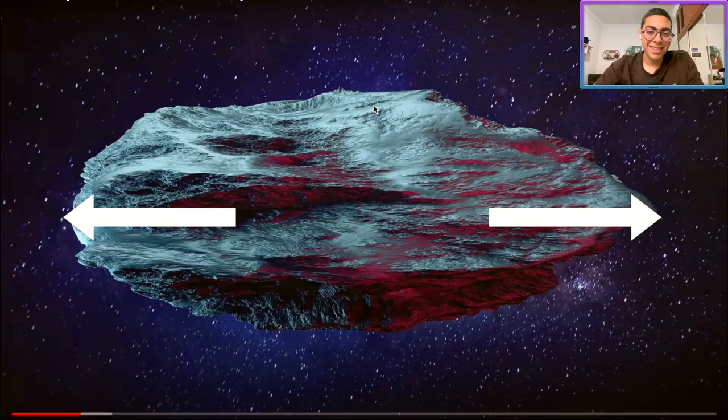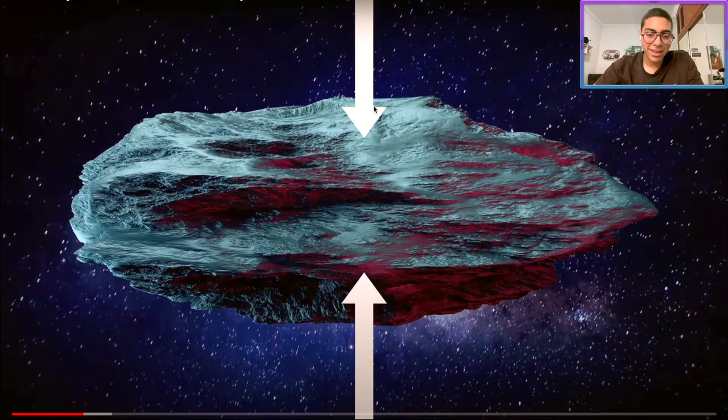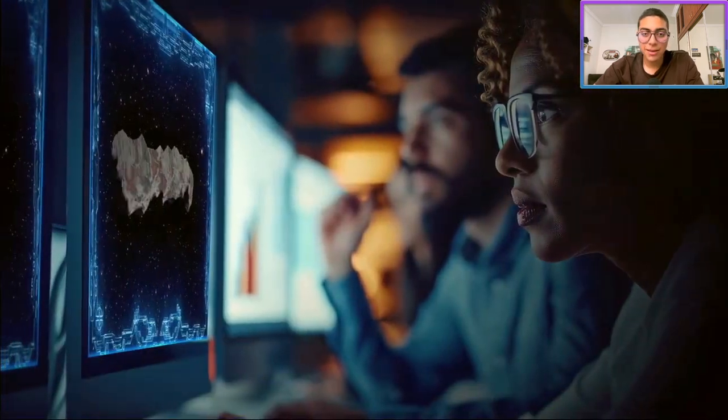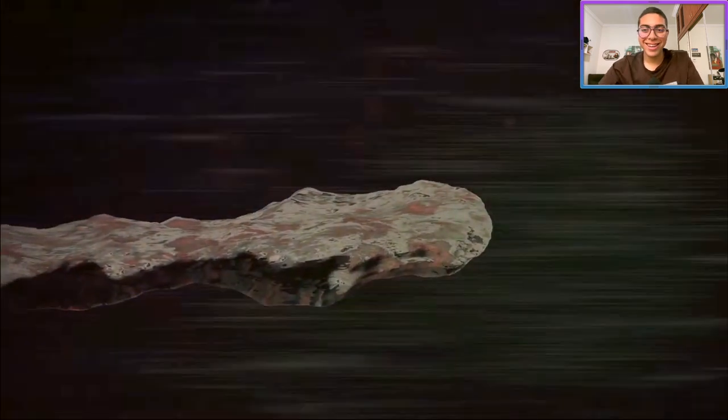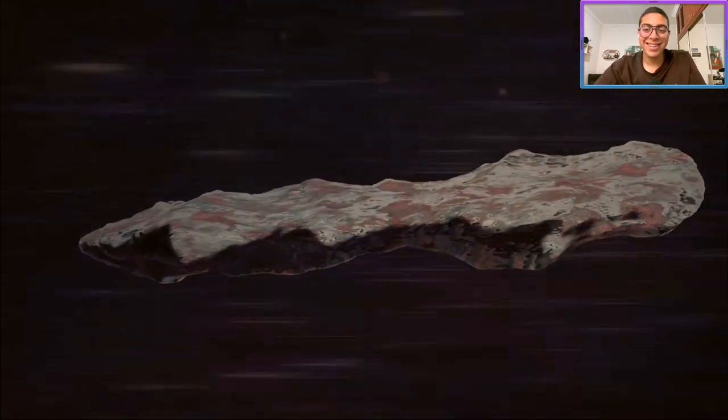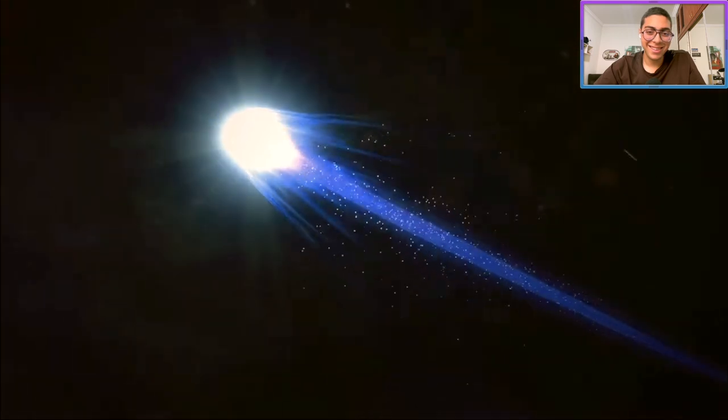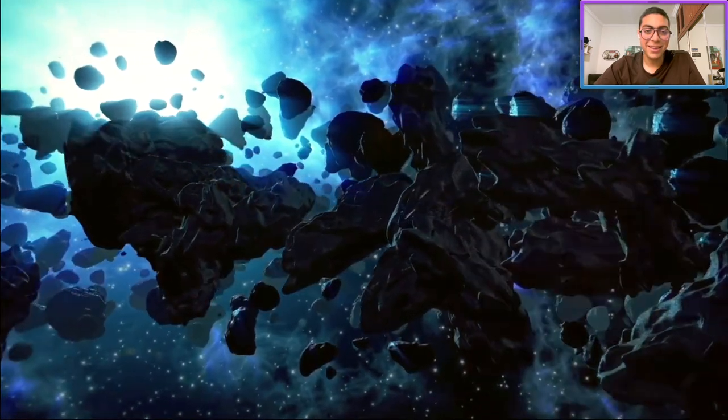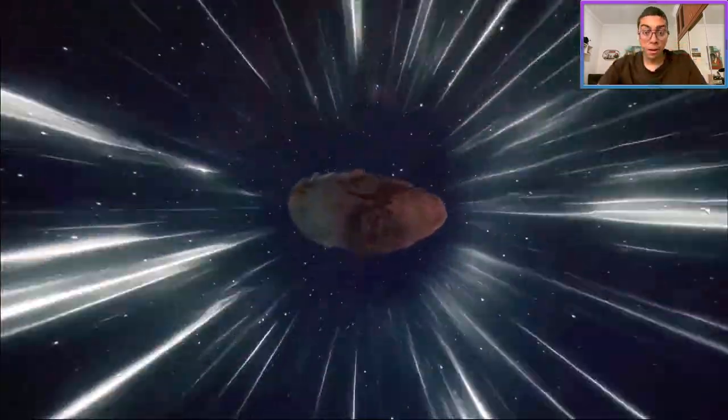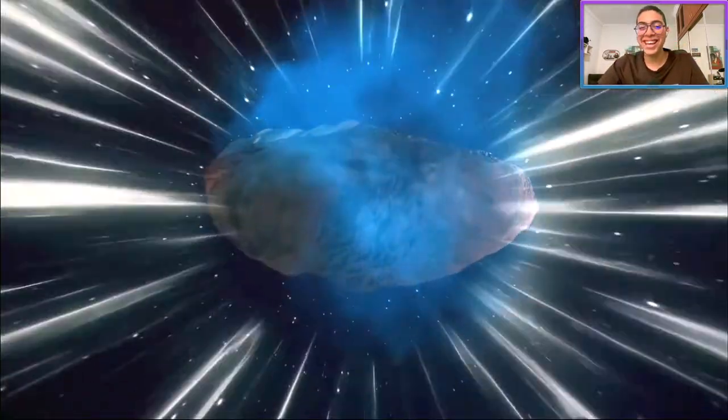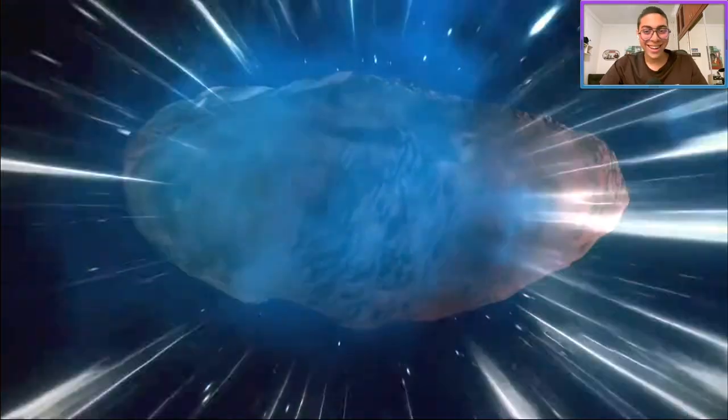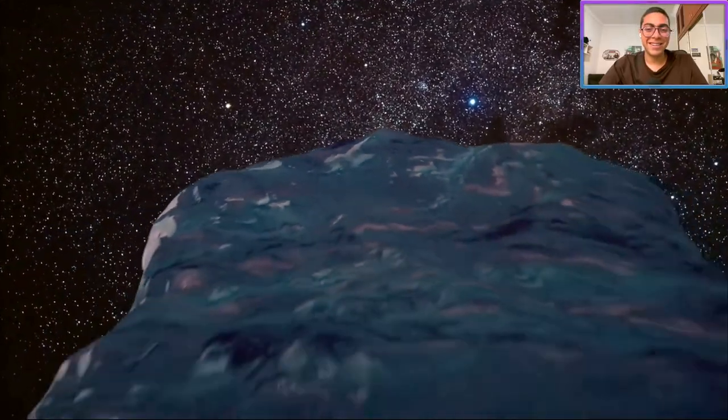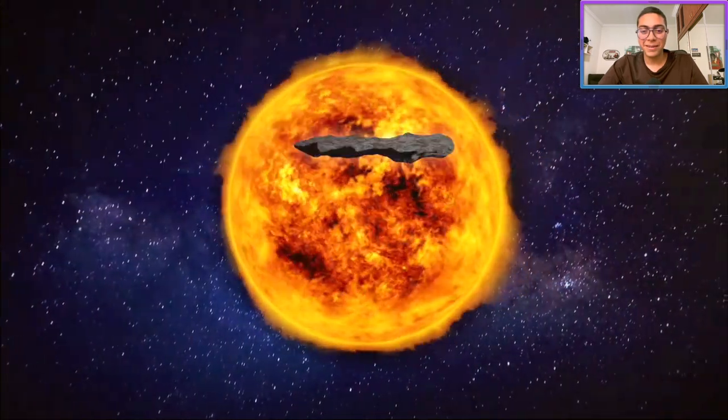Comets are icy and form bright tails when they pass near the Sun, while asteroids are basically just rocks and don't form tails. Oumuamua doesn't release gas but it's not your average rock either. Its surface is very shiny, almost like polished metal. When it passed by the Sun it sped up like it had a rocket on it, and it wasn't the Sun's gravity. Scientists aren't sure what caused it.